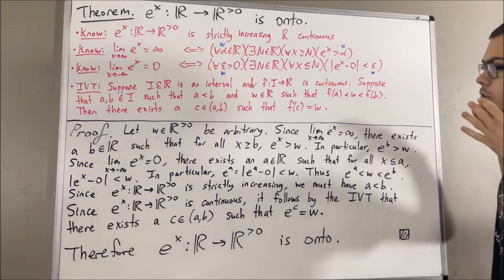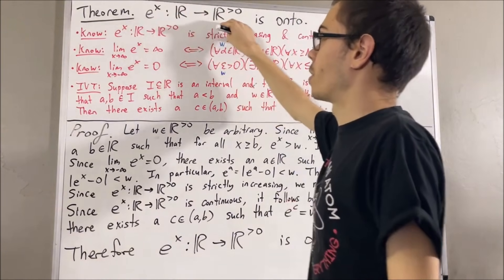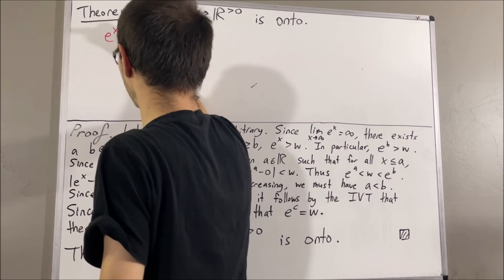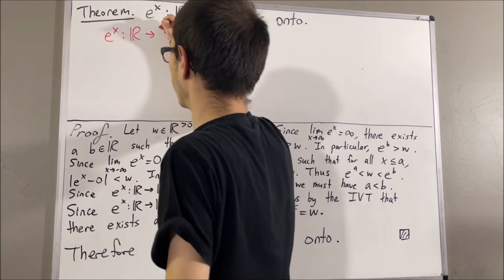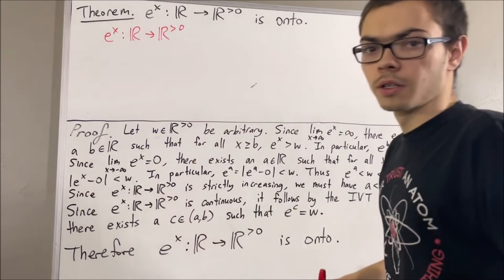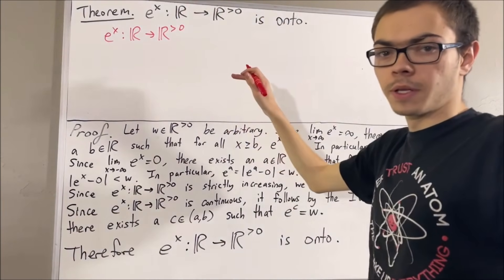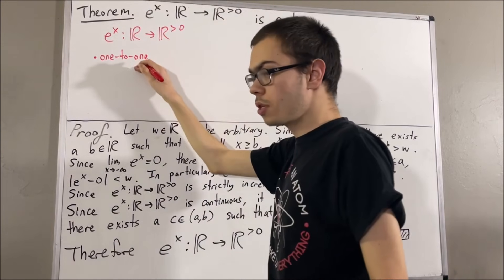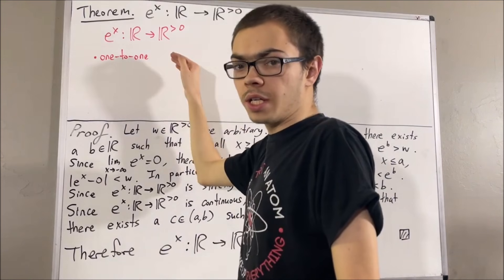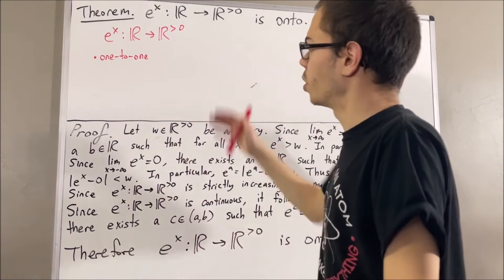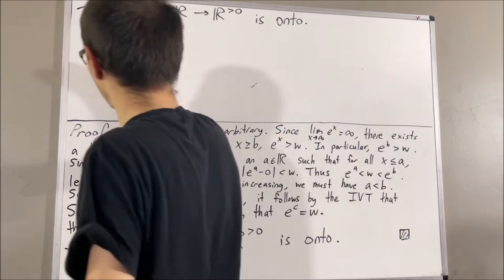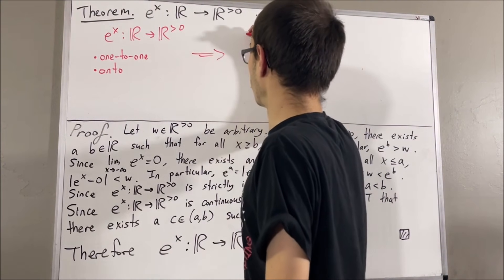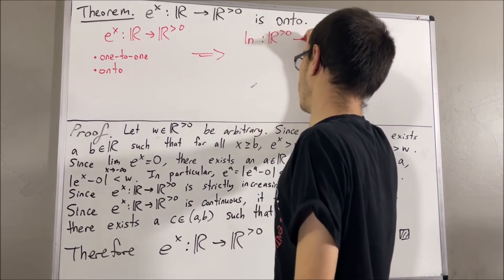Now let's talk about what we have established so far about the exponential function. We know that the exponential function is a function that goes from the real numbers and maps into the positive real numbers. We showed that this function is strictly increasing, and because it is strictly increasing, it must be one-to-one — meaning for every distinct real numbers x and y, e^x and e^y are distinct. We just established that it is also onto. So because this function is one-to-one and onto, it has an inverse, which we call the natural logarithm, mapping from the positive real numbers to the real numbers.